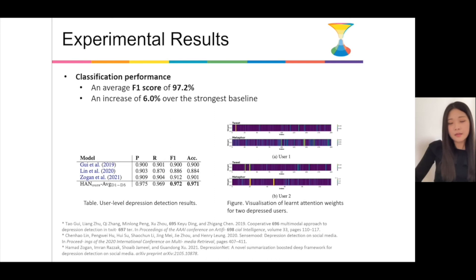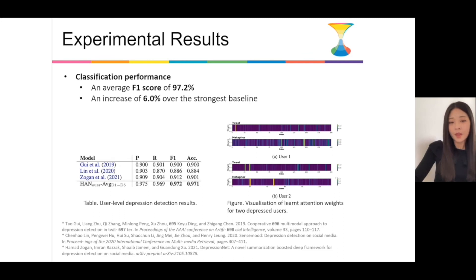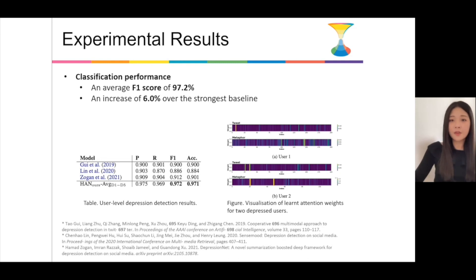If we look at the figure on the right side, it visualizes attention weights learned by our model for two depressed users. We can see different colors for different features, which indicates that our model can successfully learn the relative importance of different features.